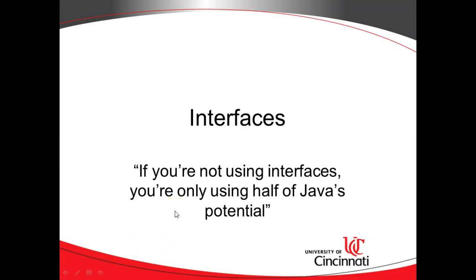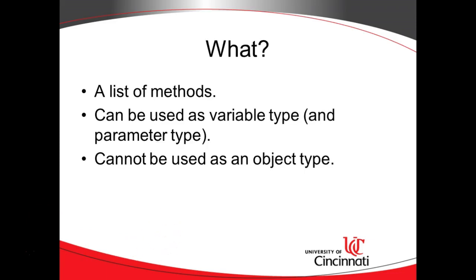So let's take a look at interfaces. First of all, what are they? It's essentially just a list of methods without any behavior for that method. It can be used as a variable type — not an object type, but just a variable type. Remember the definition of polymorphism: variable type tells you what methods you're allowed to call, and object type tells you what will happen when you call those methods. Because an interface is a list of methods, it can serve as a variable type and say these are the methods you're allowed to call. But it's only the method signatures — it does not provide any behavior, so it cannot fulfill the needs of an object.